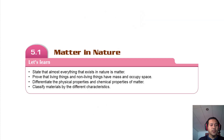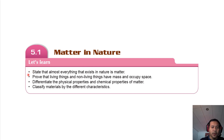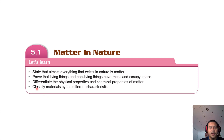We move on to subtopic 5.1, which is matter and nature. So what you will learn in this subtopic: firstly, it states that almost everything that exists in nature is matter. Two, prove that living things and non-living things have mass and occupy space. Three, differentiate the physical properties and chemical properties of matter. And number four, classify material by different characteristics.